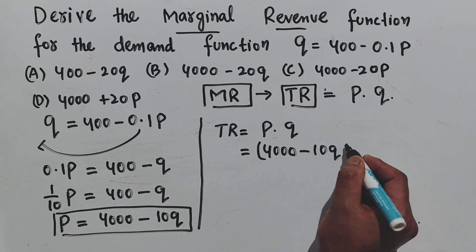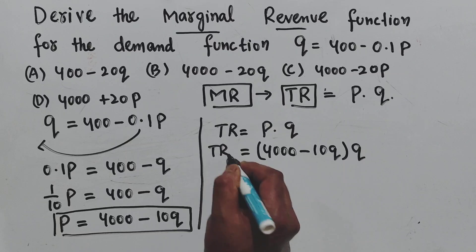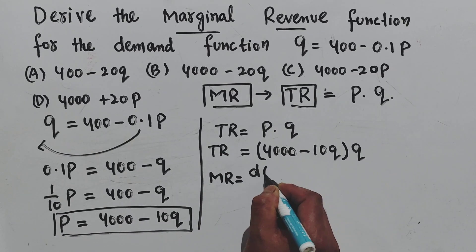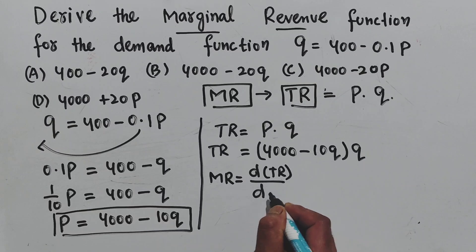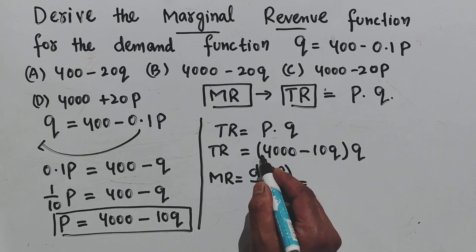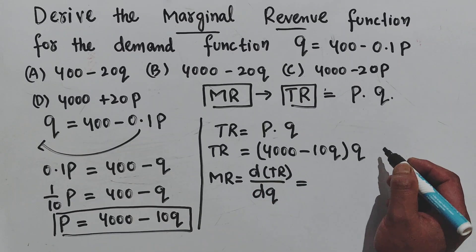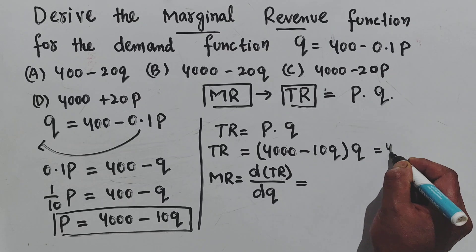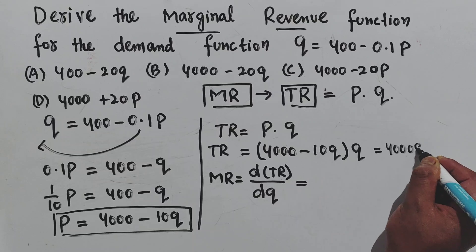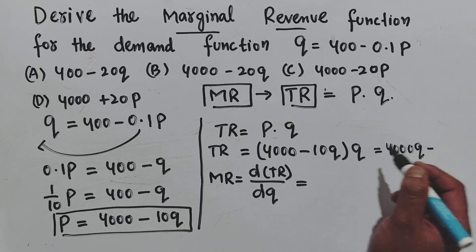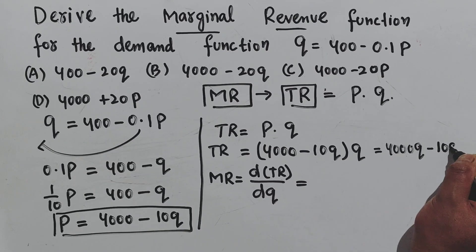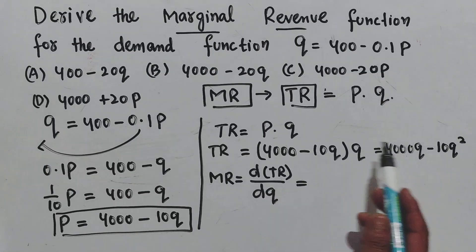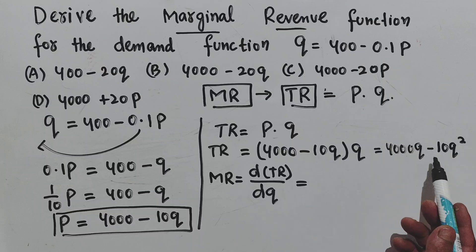Now total revenue equals price times output, so TR = (4000 - 10Q) × Q = 4000Q - 10Q². The marginal revenue is the derivative of total revenue with respect to output.